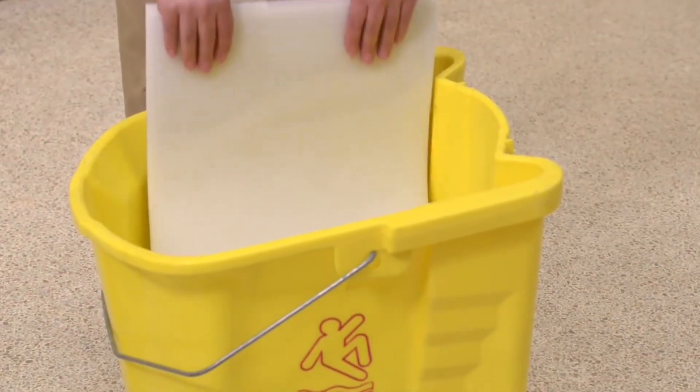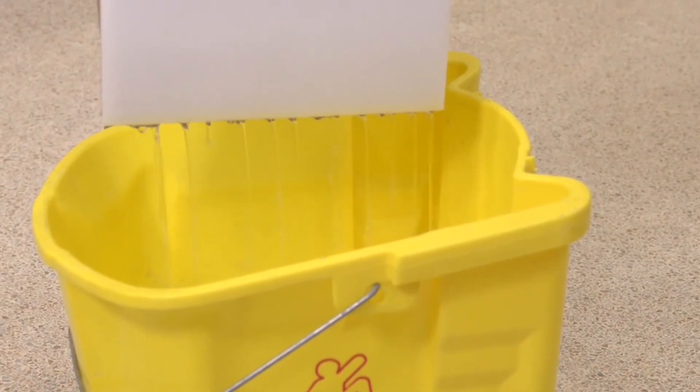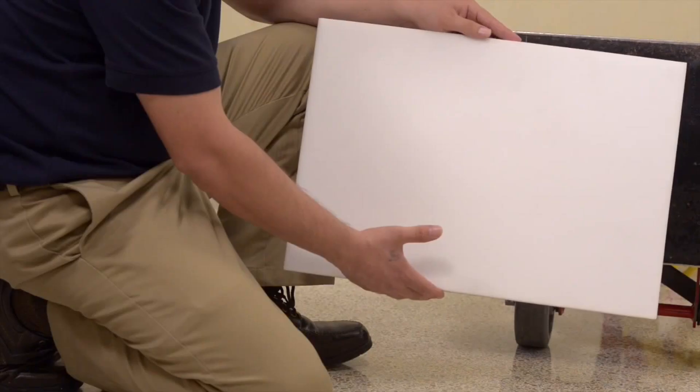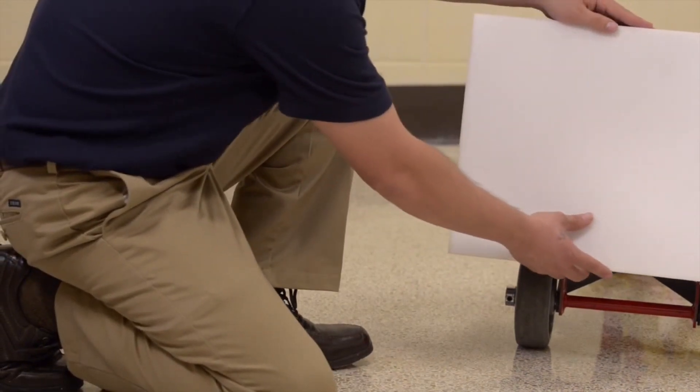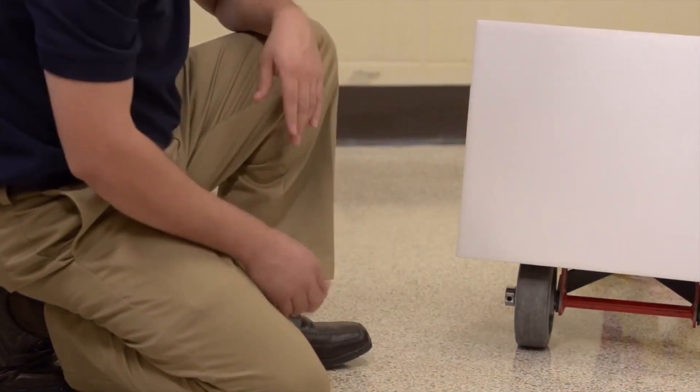To use Extract, simply saturate the pad by completely immersing it into water or a low pH neutral cleaner. Next, place the Extract floor pad onto any standard speed machine, oscillating machine or an auto scrubber with the brown side of the pad up.